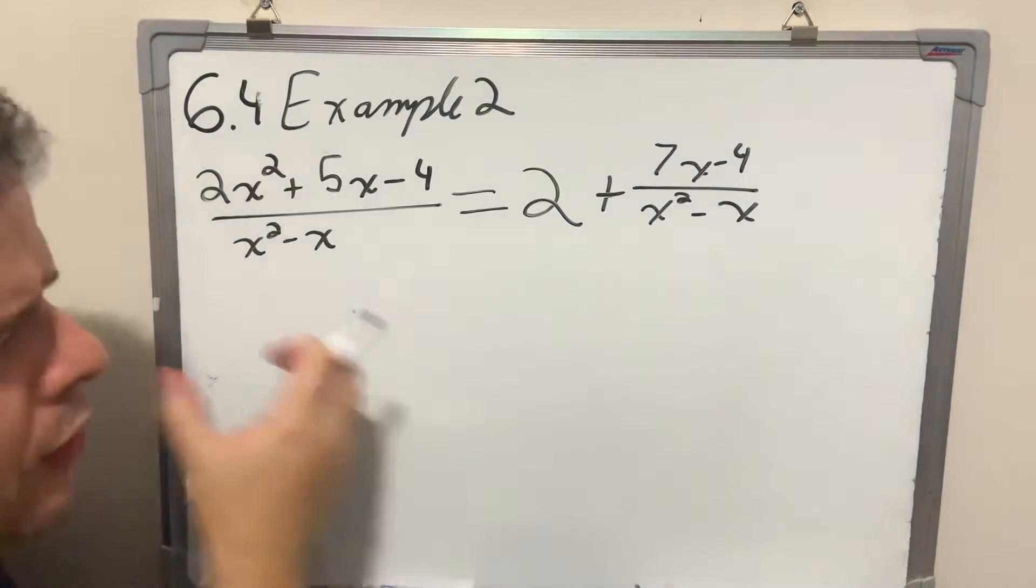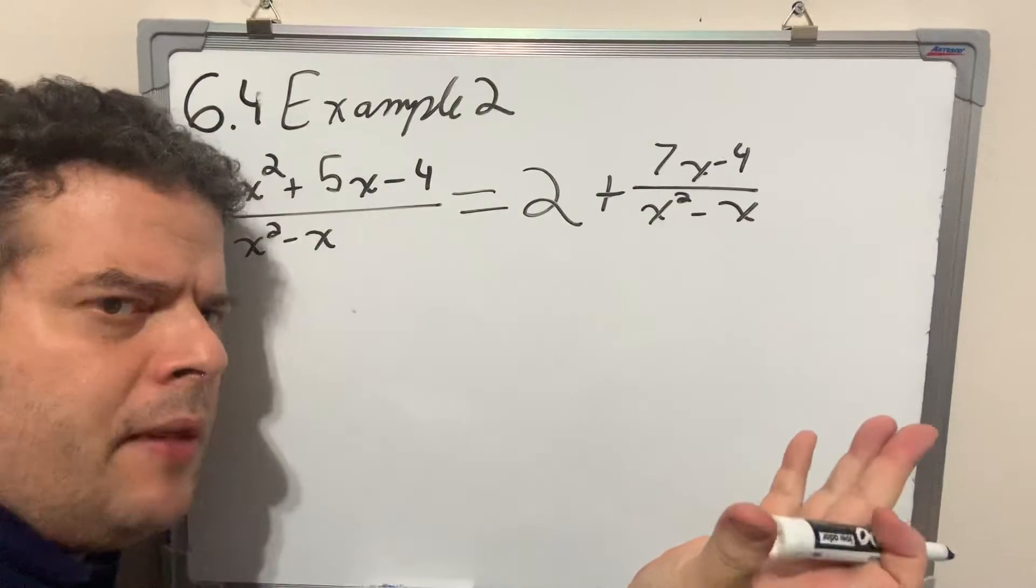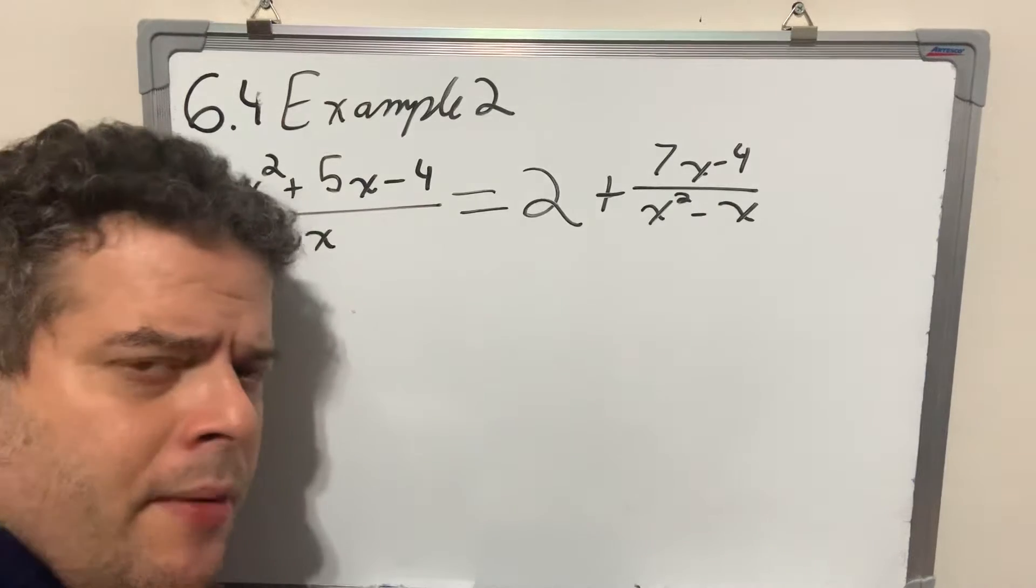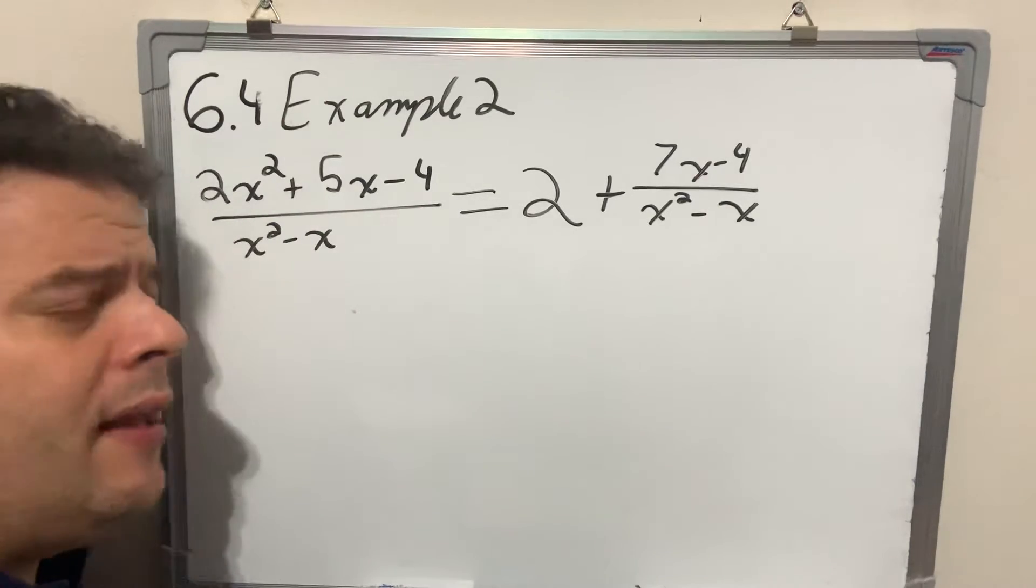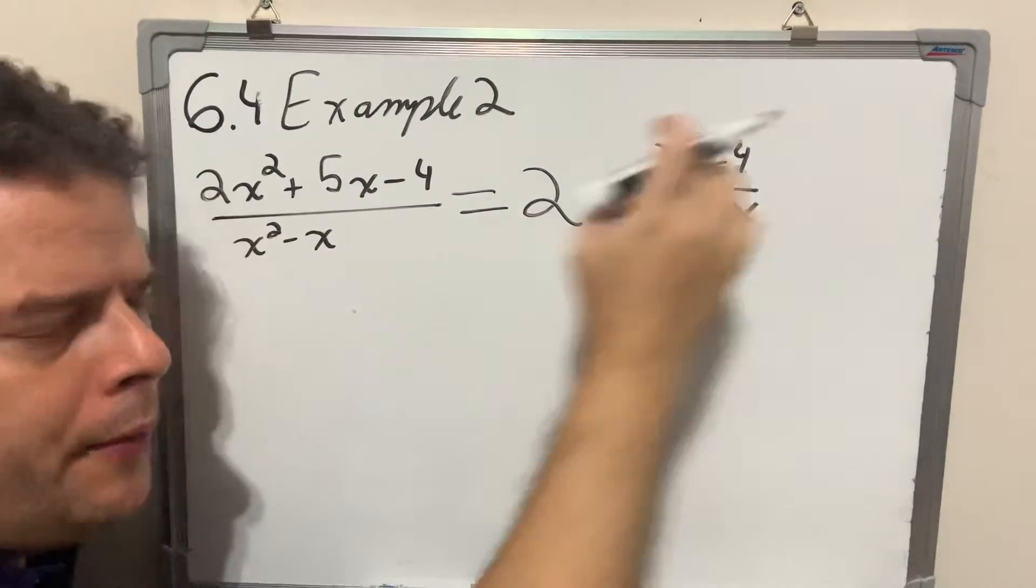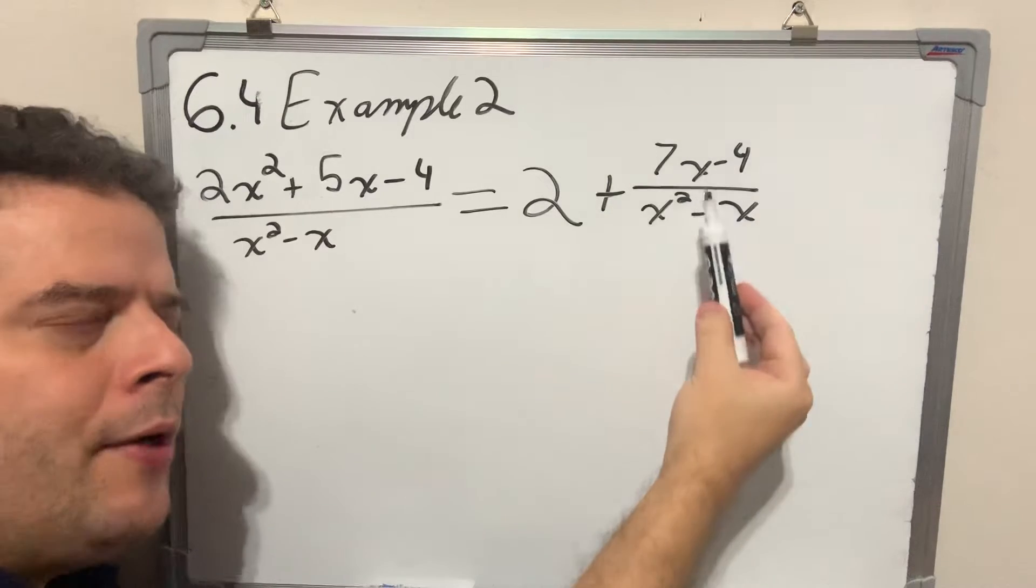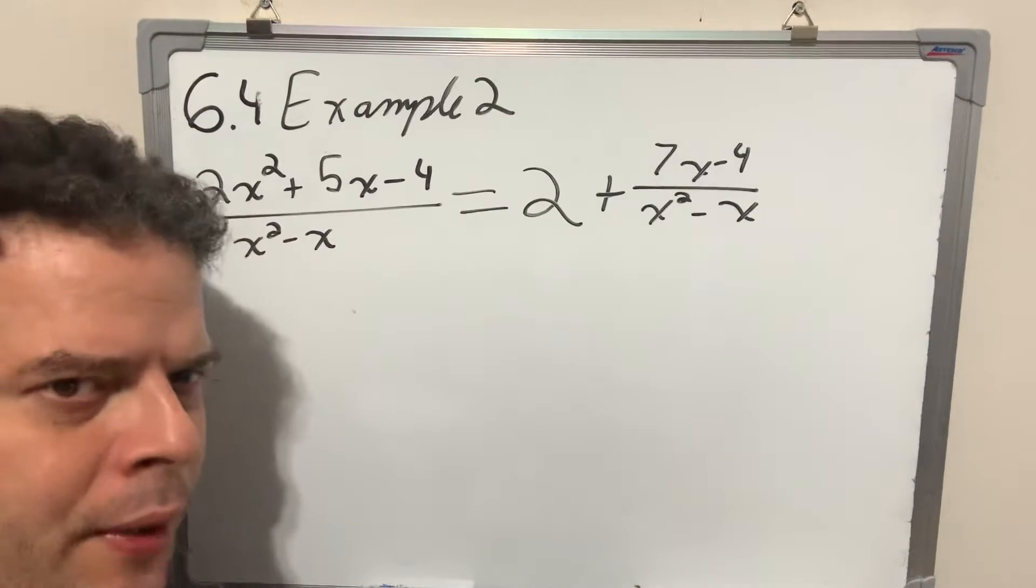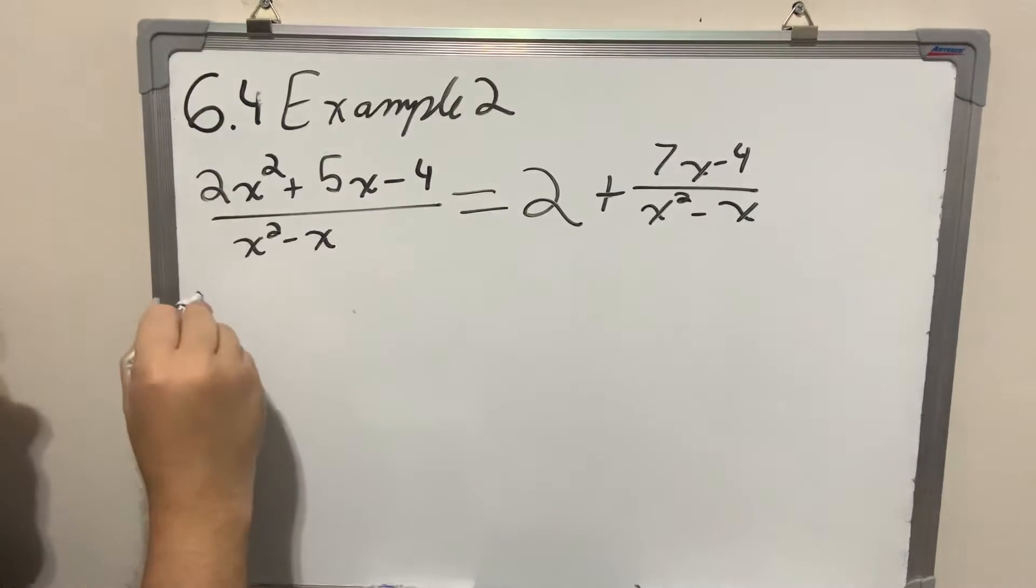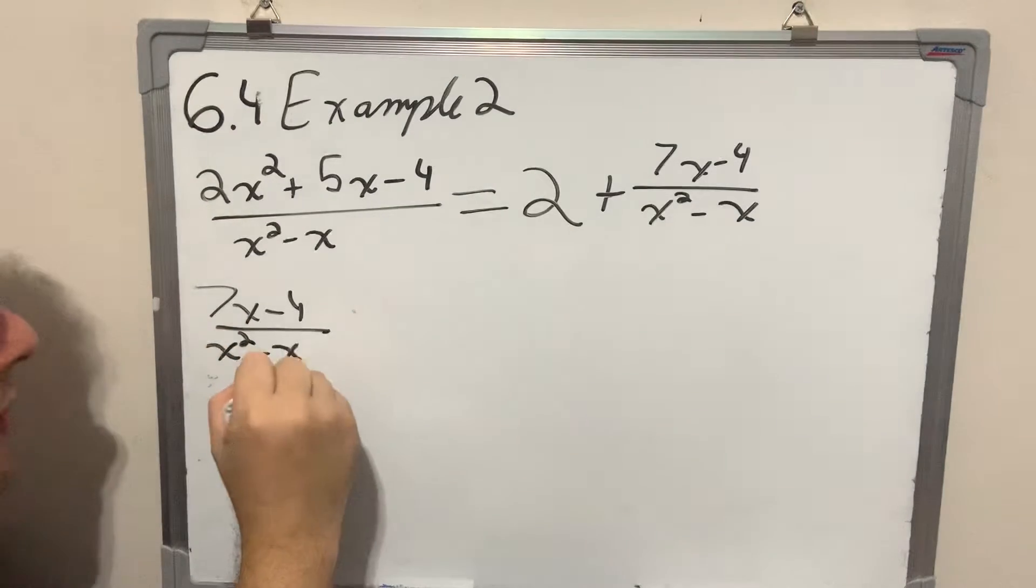So again, using long division, all I did was rewrite this expression as this expression. It's the same thing. Now the number 2, you can forget about it till the very end. We're not going to use it anymore. But when we're giving the final answer, you do have to put that number 2. I'm going to focus on the remainder part. Now if you notice, the degree in the numerator is smaller than the degree in the denominator. Same thing we did yesterday from now on.